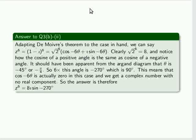So the answer is that z to the power of 6 equals 8 times i sine of minus 270 degrees, which is the same as the sine of 90 degrees, which is going to be 1. So 8i is the answer.